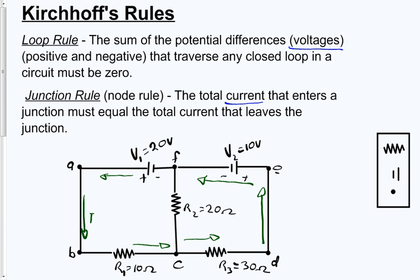Let's label this: the left loop current will be current 1 (I1), and the right loop current will be current 2 (I2). Going across resistor 2, because of the junction rule at junction C, we have I1 coming in, and coming out we have I2 and whatever is left over. Logic tells us that what's left over is I1 minus I2. So that's what's going across resistor 2. On the left part of the loop we have I1, on the right we have I2, and down the middle in this direction we have I1 minus I2. That is applying the junction rule across junction C.